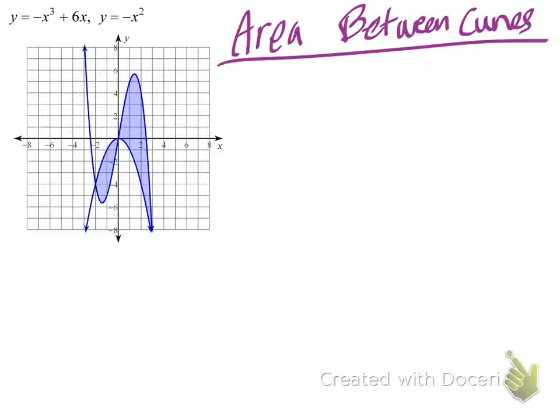The main protocol is to think about the upper function minus the lower function, or top minus bottom. I have two regions here. In the first region, shown in green, the parabola is the higher of the two functions, even though it's in the negative region.